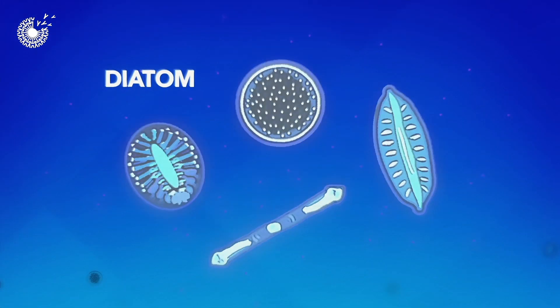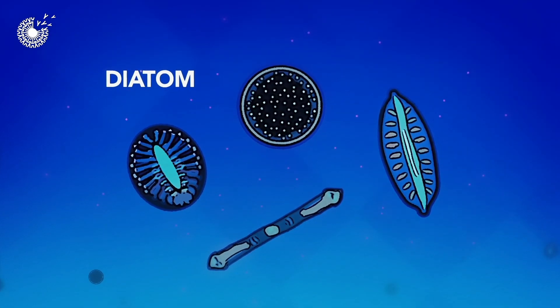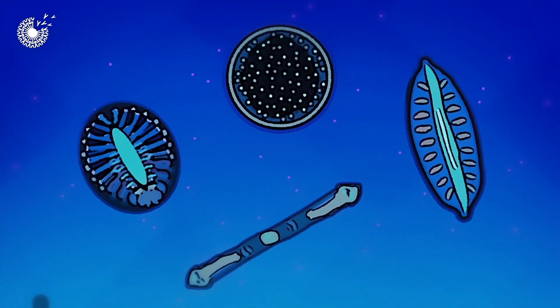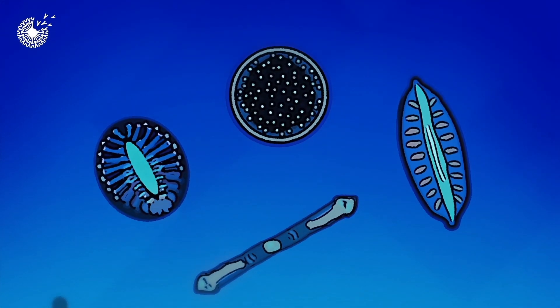Meet the diatom. These single-celled microalgae live in our oceans, producing oxygen and taking up silica from the water. But why do they absorb silica?